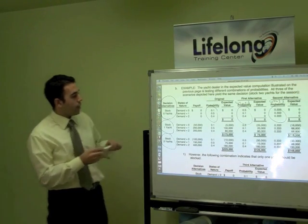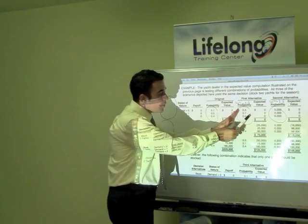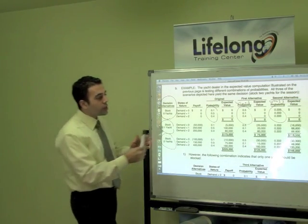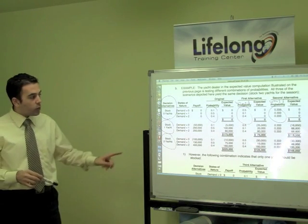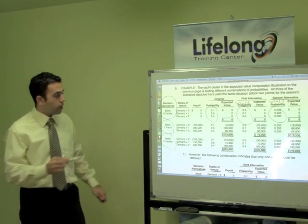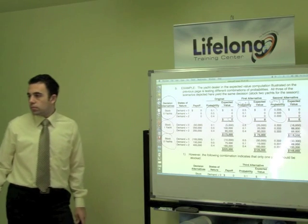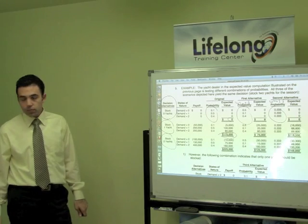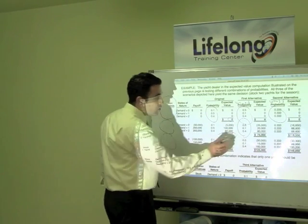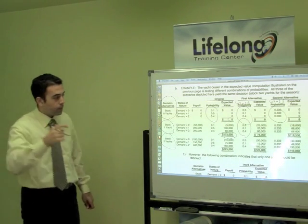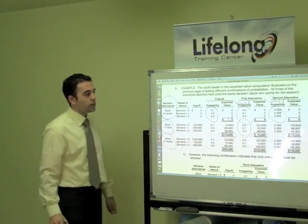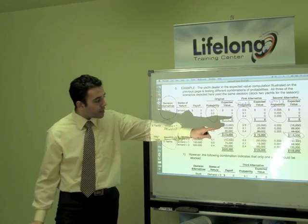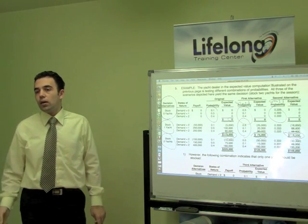For decision option 0, the expected value is zero — nothing. For decision option 1, based on our original calculation it gives 175. But now when we change our probabilities — asking 'what if' — we get a lower expected value. When we change probabilities again, the expected value is even less. So now we ask: is that acceptable? Is that acceptable given that this might be the actual demand?